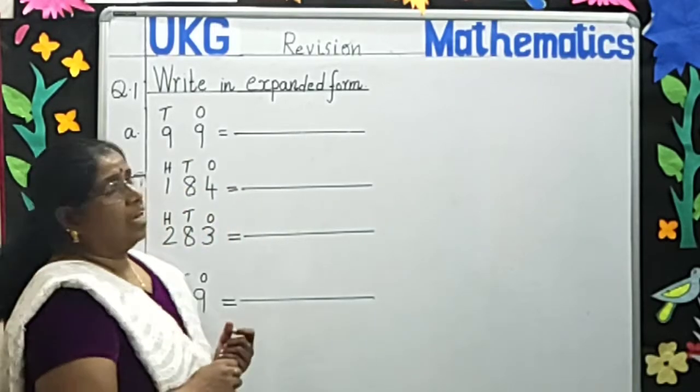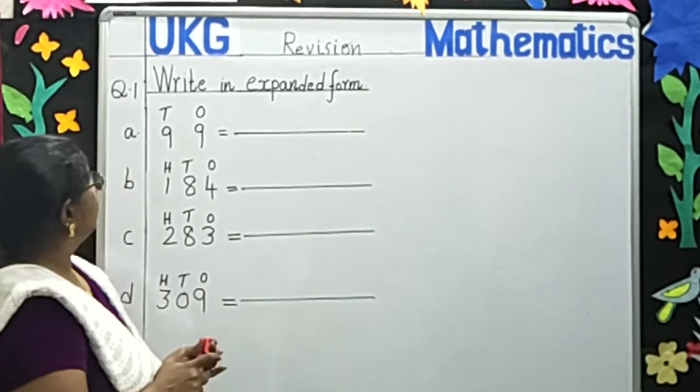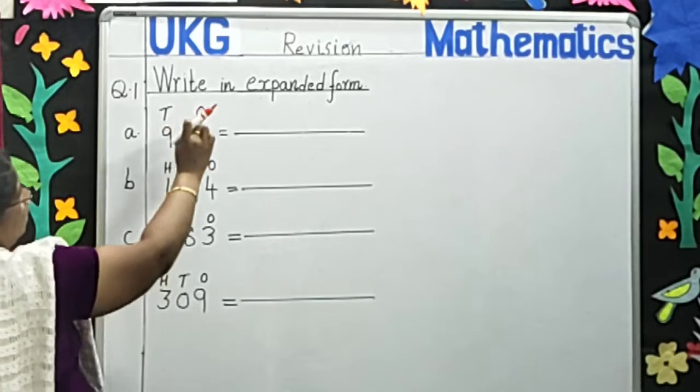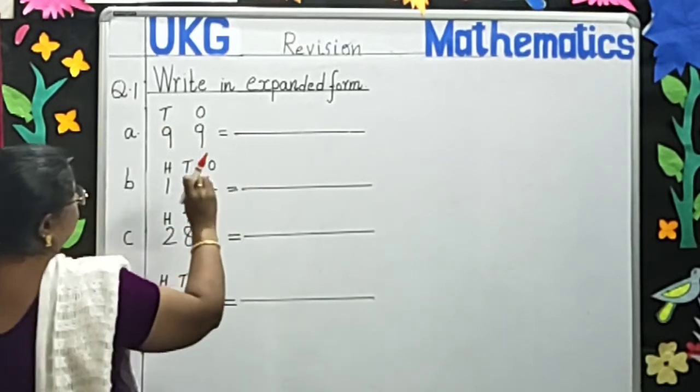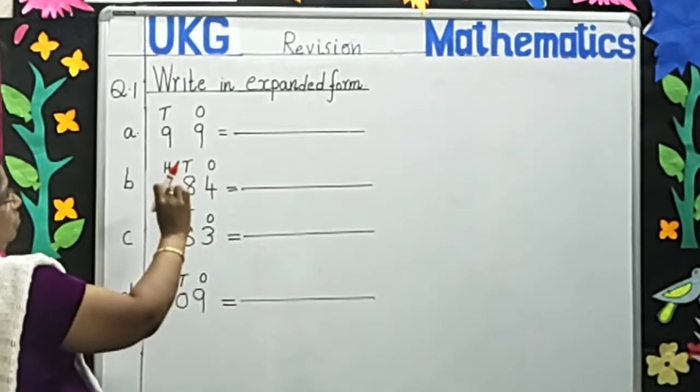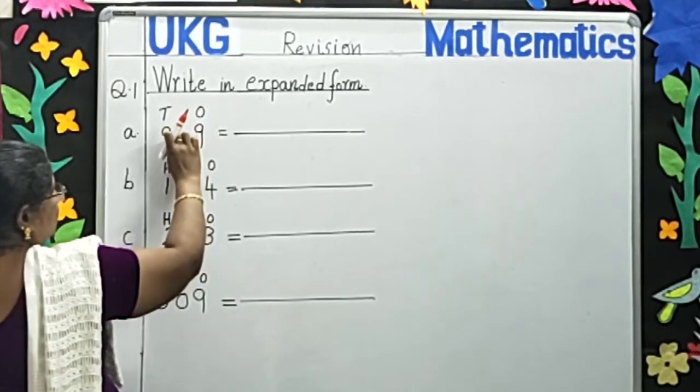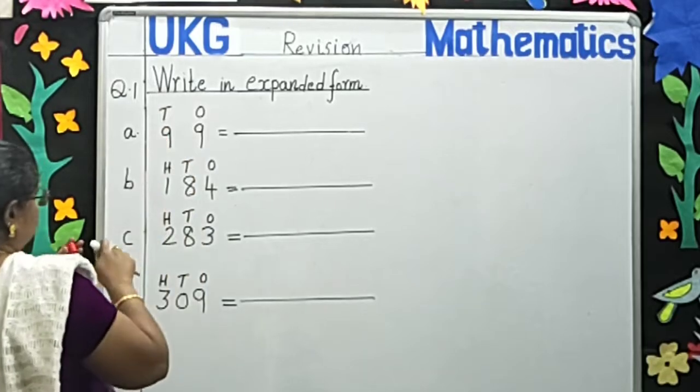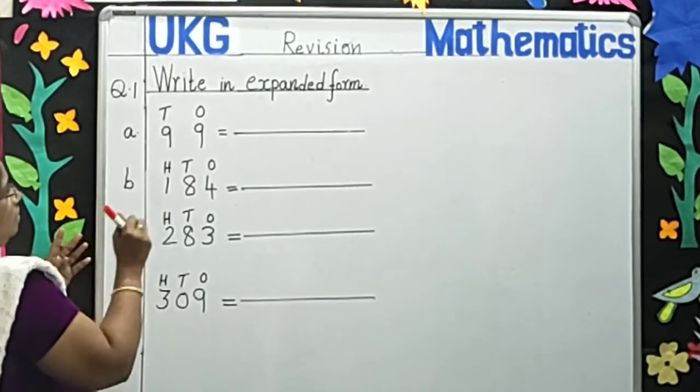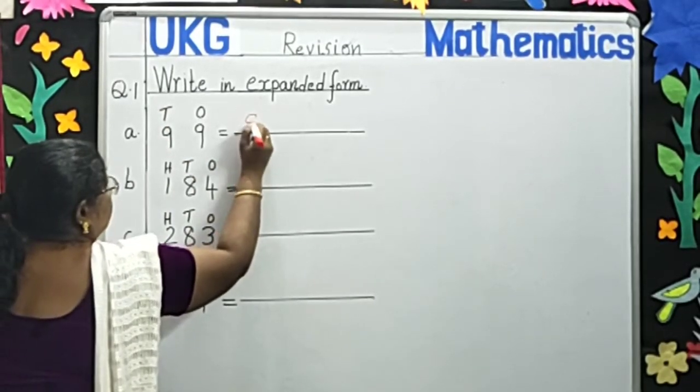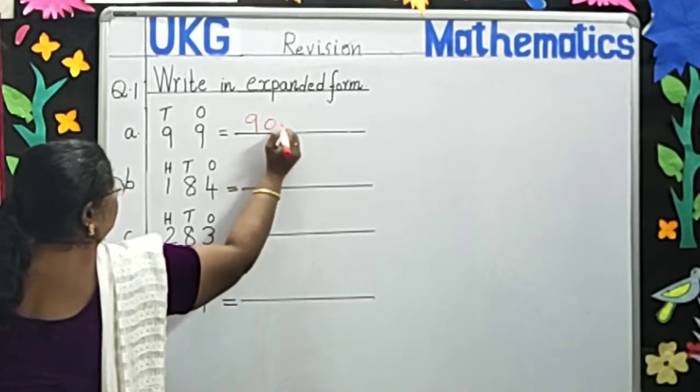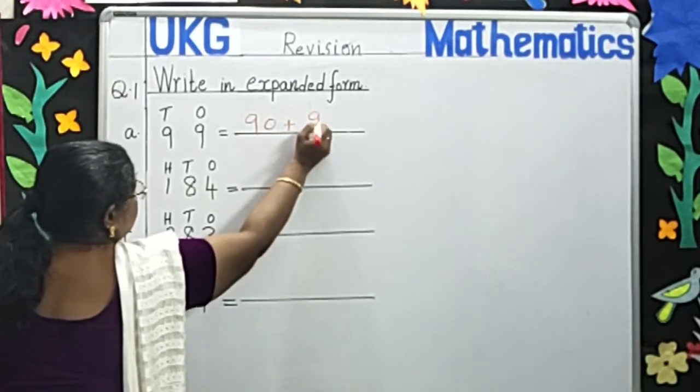Now let's start with question number 1. Write in Expanded Form. 99. This 9 is in 1's place. This 9 is in 10's place. So we will write 9 tens, 90, plus 9 ones.